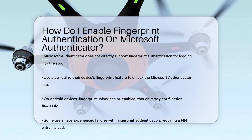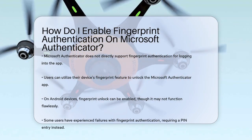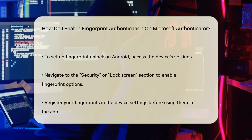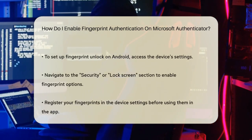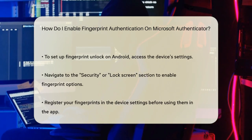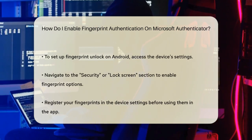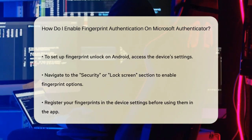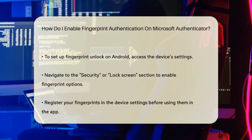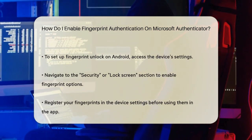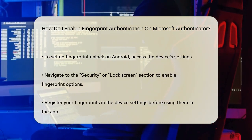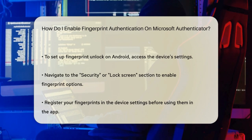Here's what you can do instead. If you have an Android device, you can enable the fingerprint unlock feature for the Microsoft Authenticator app, but it might not work as seamlessly as you expect. Some users have reported issues where the fingerprint authentication fails, and they have to enter their PIN code instead.